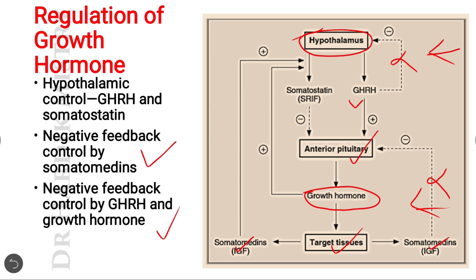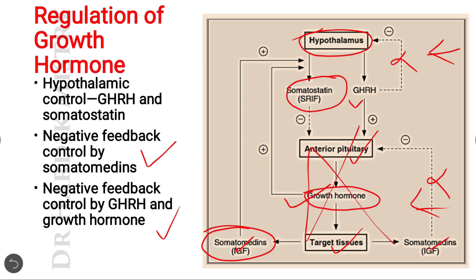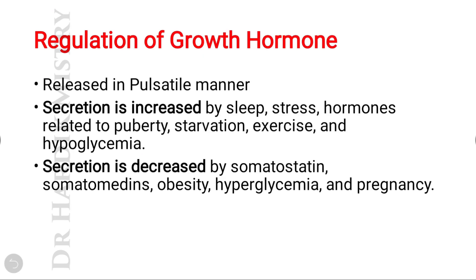There are two negative feedback mechanisms: first at the GHRH-hypothalamus level, and second at the somatomedins and anterior pituitary level. Additionally, both growth hormone and somatomedins simultaneously stimulate the release of somatostatin or growth hormone inhibitory hormone, which has a negative effect on the anterior pituitary and stops all these processes. Growth hormone is released in a pulsatile manner.